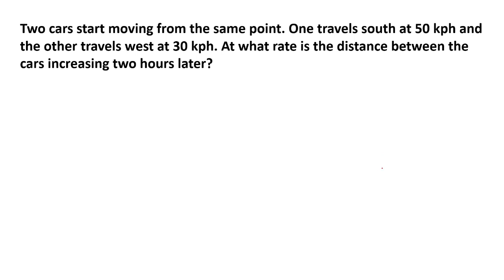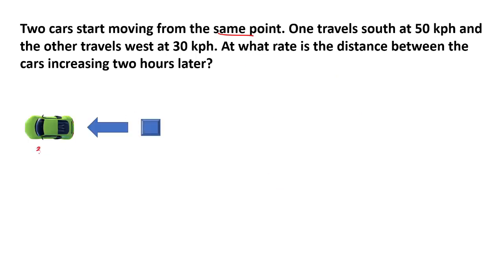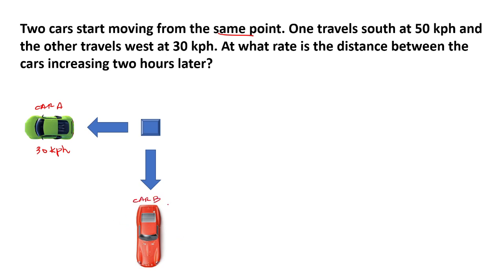Two cars start moving from the same point. One travels south at 50 kilometers per hour and the other travels west at 30 kilometers per hour. At what rate is the distance between the cars increasing two hours later? So let's say this is the same point — one car is traveling west at 30 kph, that's car A, and the other is car B traveling at 50 kilometers per hour.